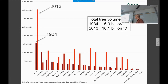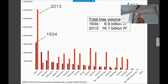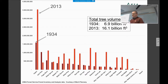Our forests recovered pretty well. This graph of forest inventory analysis data goes back to 1934. We looked at total tree volume in 1934 compared to 2013. For most forest types in that post-fire, heavily disturbed landscape, most of them recovered pretty well — about 7 billion cubic feet of wood on the ground in 1934, and almost 16 billion cubic feet now. In just about 100 years, we can see that our forests can respond to these disturbances by growing and reoccupying the disturbed landscape.